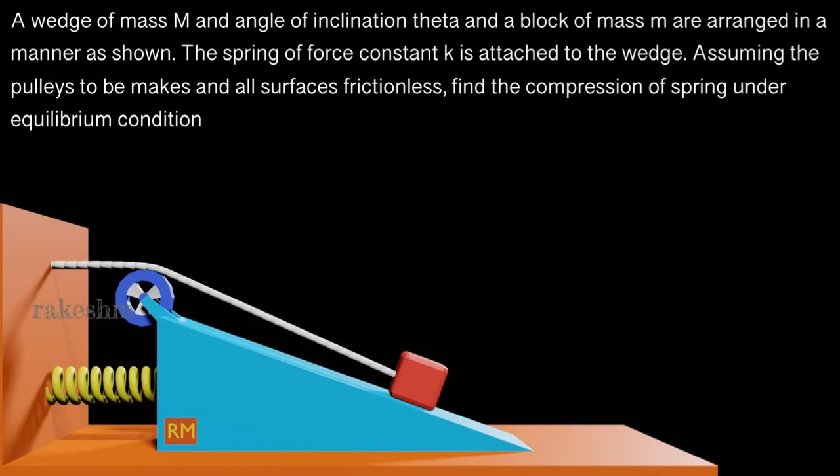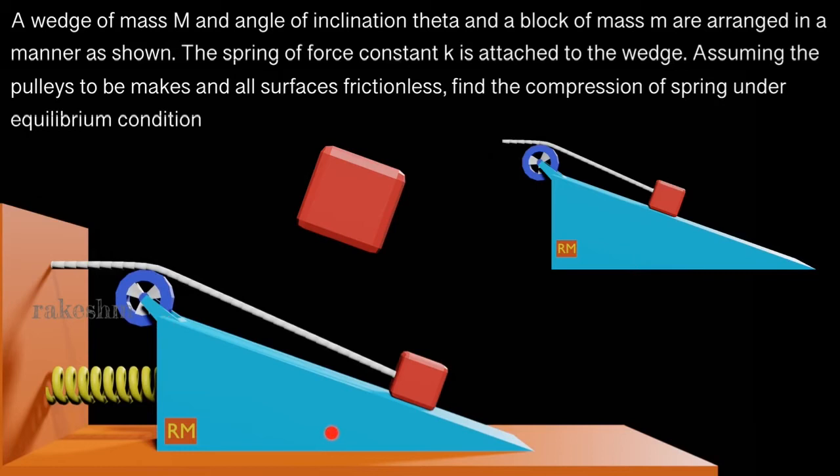Let us take the help of free body diagrams to solve this question. One way of doing it is you draw the free body diagram of only the wedge and draw the free body diagram of only this small block. Then write net force equals to 0 in the x and y directions and solve it. A much easier method would be to take the free body diagram of the wedge plus the block here and only the small block separately.